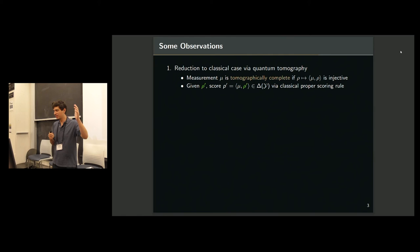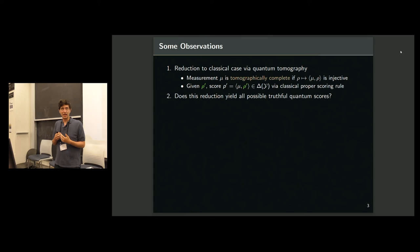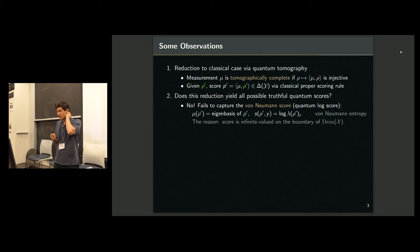So the more interesting question then becomes, does this simple reduction to the classical case actually get you everything, all possible truthful quantum scoring rules? It turns out the answer is no, and it's missing a fairly important one, in my opinion, which is like the quantum analog of the log score, which I call the von Neumann score, where the measurement is the eigenbasis of the reported mixed state, and then you apply the log score to the eigenvalues. Don't worry about it.